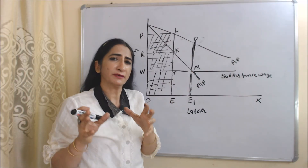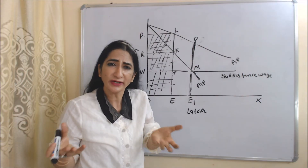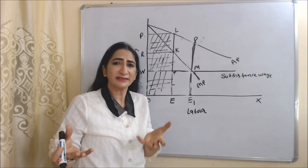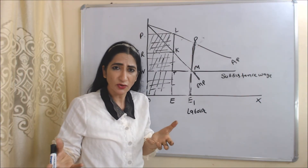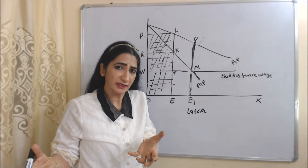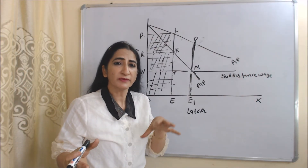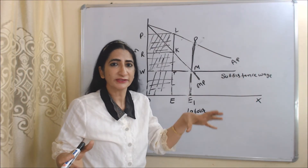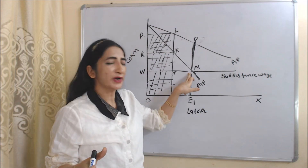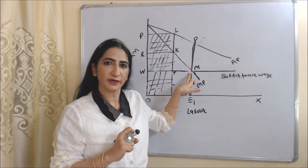If profit becomes zero, that means there is no investment. If there is no investment, there is no output, no employment, no increase in income. As a result, our economy will move towards the stationary state. So this point M will be called the stationary state of the economy.